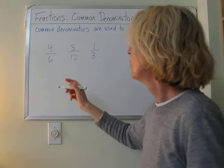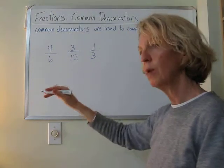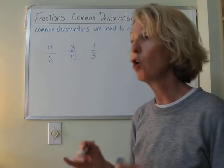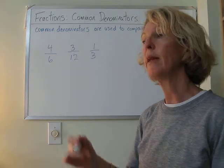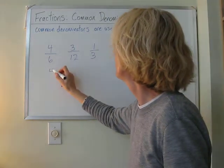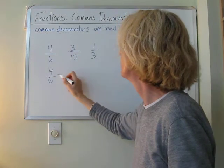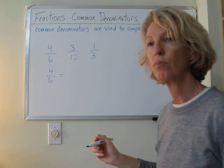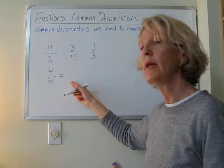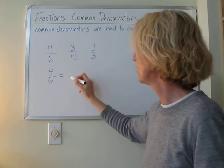Okay. So, what we're going to do is we're going to rewrite these two fractions so that all have the denominator of 12, a common denominator, and then we're going to be able to compare the fractions. So, if we have 4 sixths, what do we do? We multiply it by 2 to get to 12.